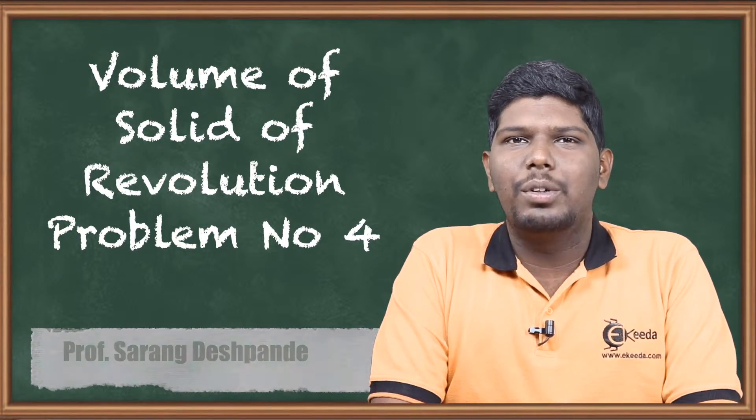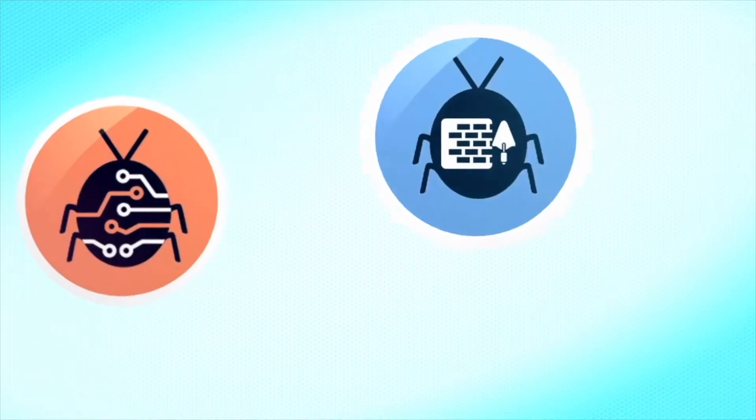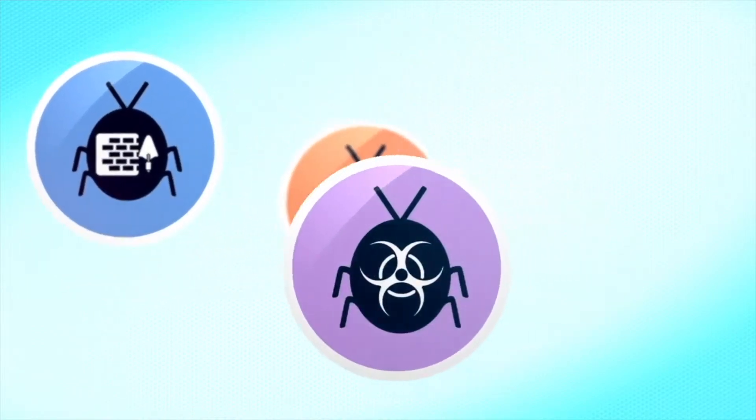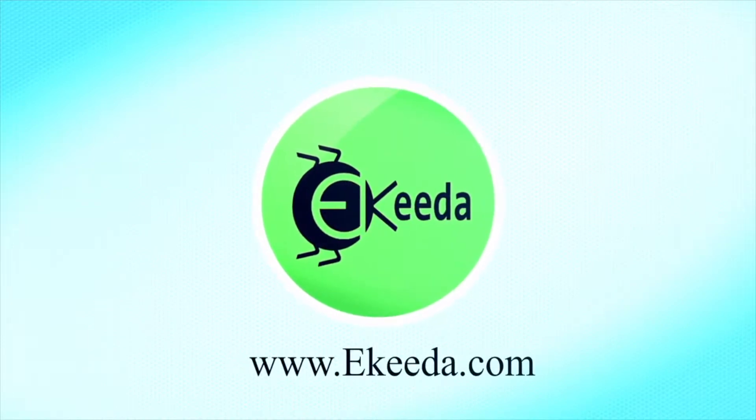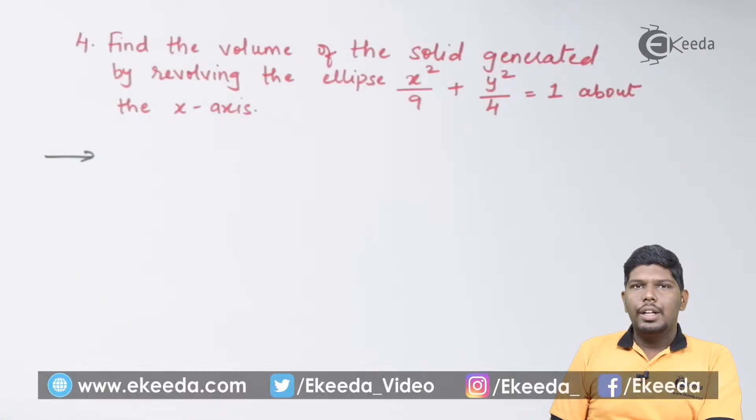Let us start with problem number 4. Find the volume of solid generated by the ellipse x²/9 + y²/4 = 1 about the x-axis.